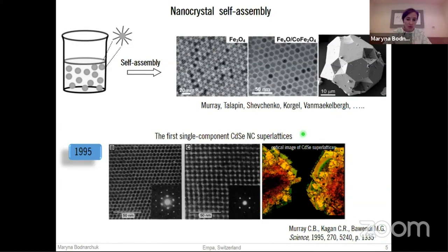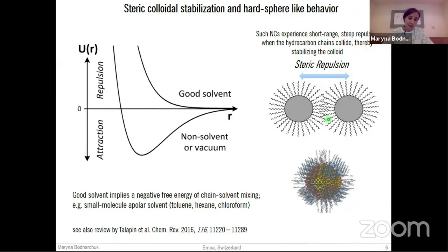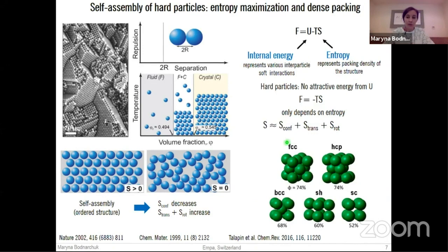Such superlattices adopt the most densely packed structures, which are either a hexagonal array in two dimensions or FCC or HCP lattices in three dimensions. These structures are usually formed by sterically stabilized nanocrystals with inorganic cores and hydrocarbon ligands on the surface. In a good solvent like toluene, there is a negative free energy for chain-solvent mixing. As particles approach each other, their brushes repel because they prefer to mix with solvent molecules. Such steric repulsion is a short-range interaction; therefore, in principle, we can treat our particles as hard spheres.